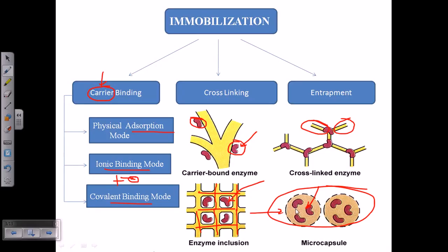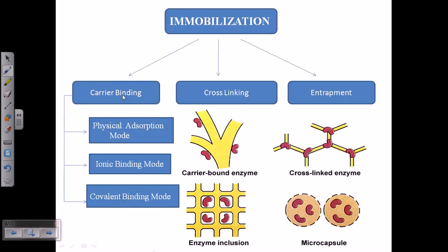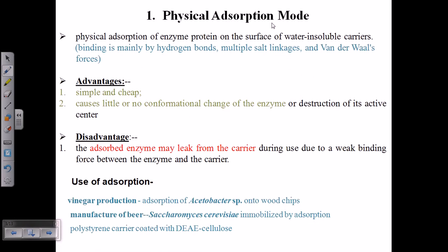A cellulose coat or cellulose vehicle inside which enzymes are delivered. Let's begin with the physical absorption mode, which is a type of carrier binding. We will see physical, ionic, and covalent, three of them. This is the first one, physical absorption mode.